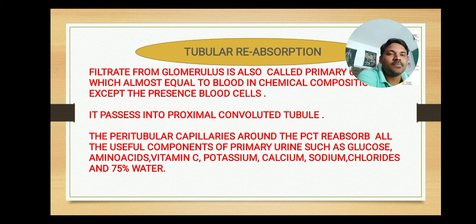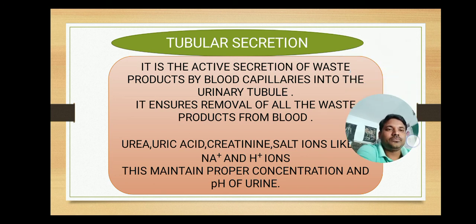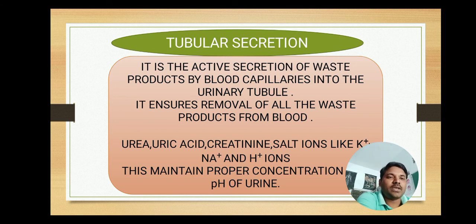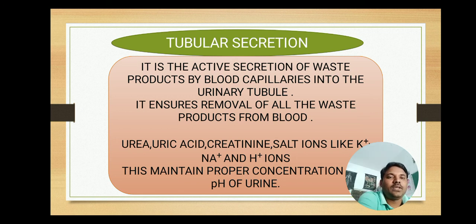The third step is tubular secretion. It is the reverse process — not absorption but secretion. It is active secretion, meaning it is not by simple diffusion or osmosis but by consuming energy. It is the active secretion of waste products by blood capillaries into the urinary tubule. Whatever substances are not necessary to the body, if they are harmful or waste, they are removed through tubular secretion.